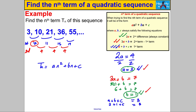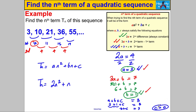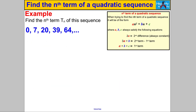The last thing I need to do is find c. I know that a + b + c always gives me the first term, which was 3. So 2 + 1 + c = 3, which gives 3 + c = 3, therefore c = 0. So the nth term is 2n² + n. There you go — I've found the nth term of this quadratic.